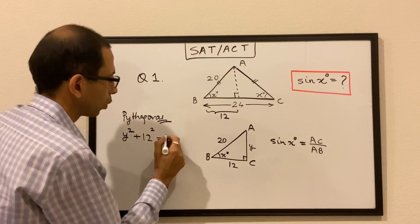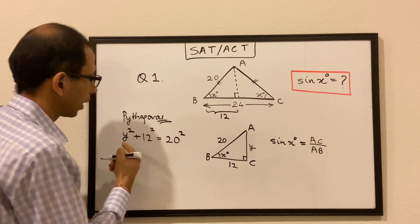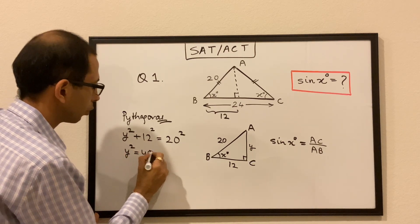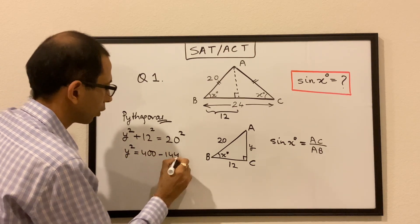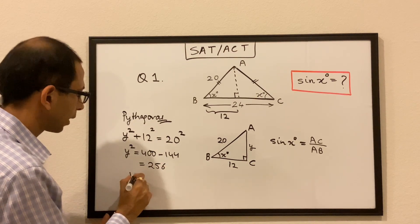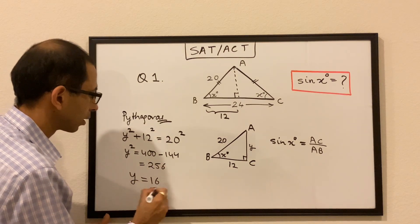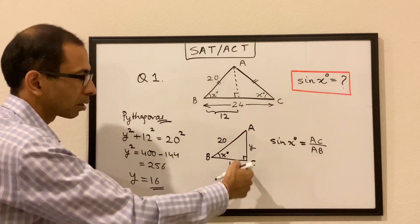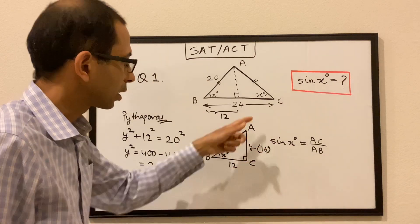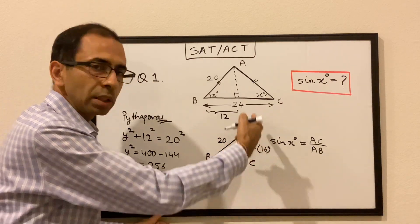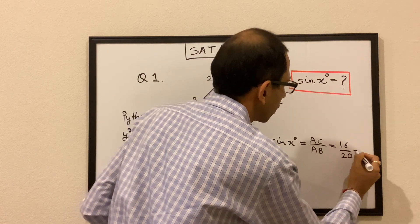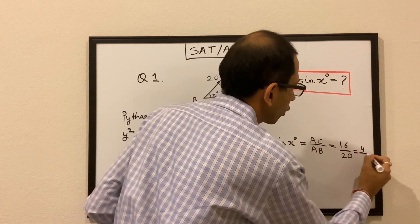We solve for y: y² = 400 − 144 = 256, hence y = 16. So the length AC is 16. Therefore, sine of x = AC over AB = 16 over 20, which is 4 over 5.